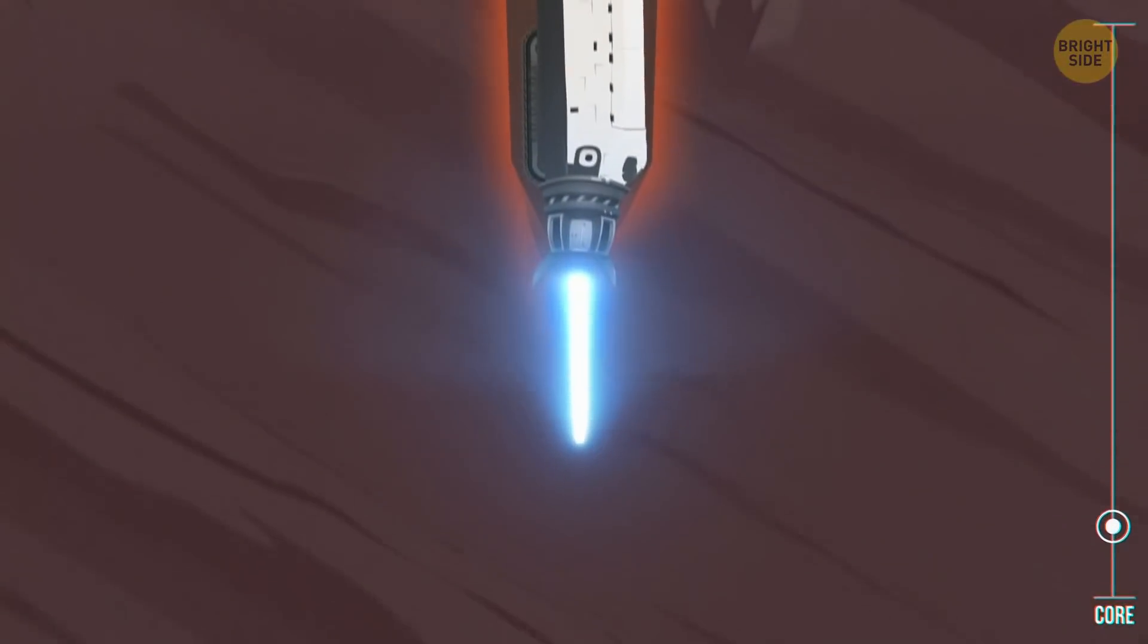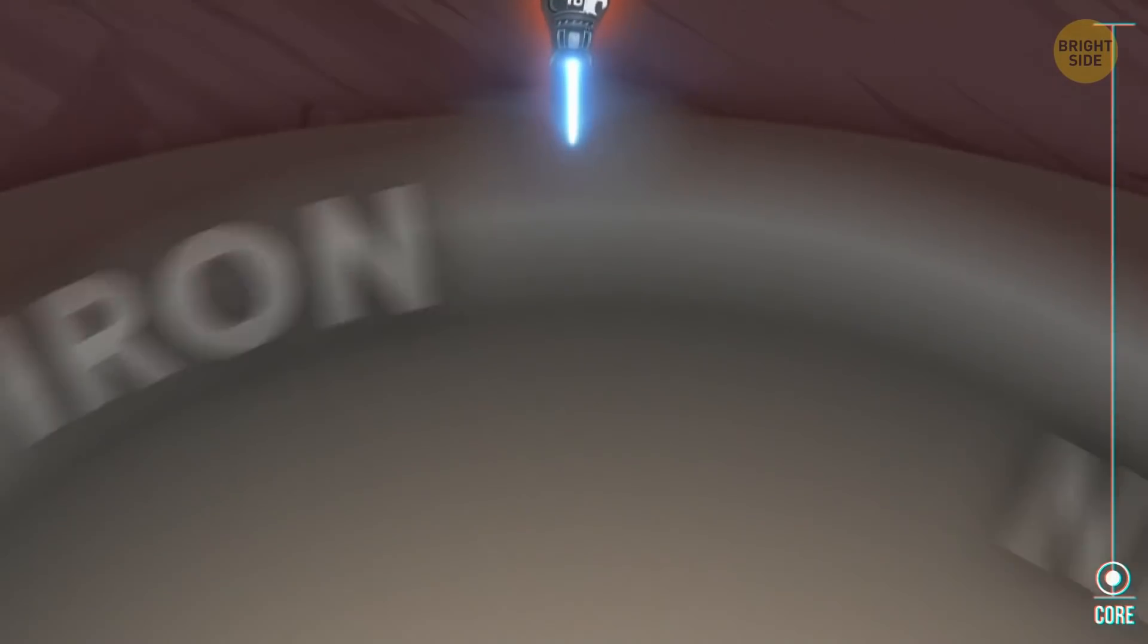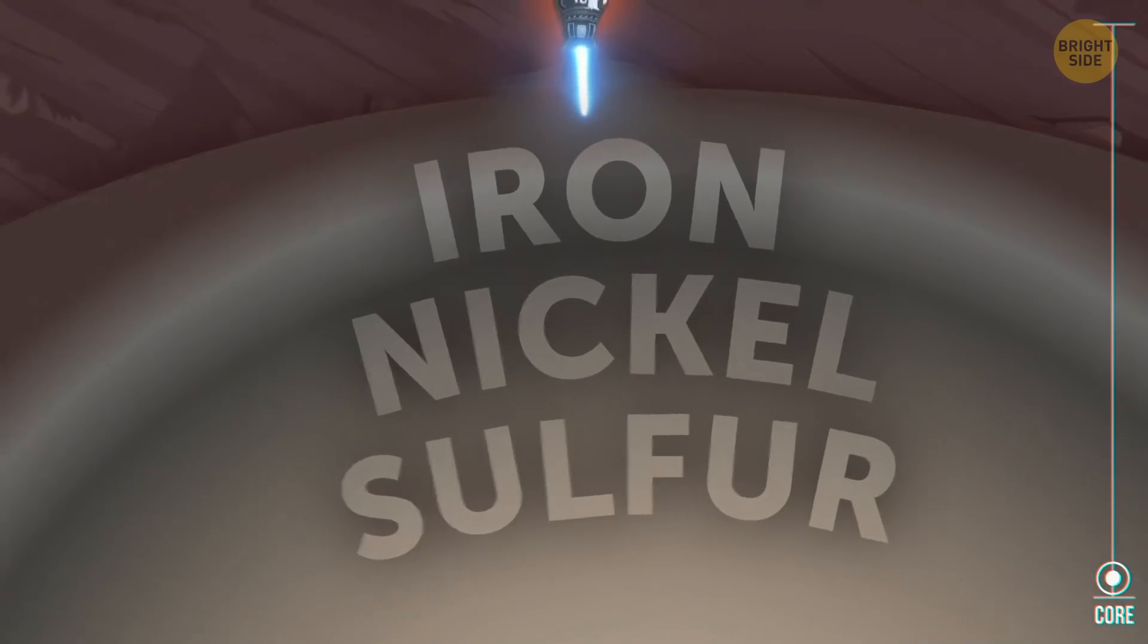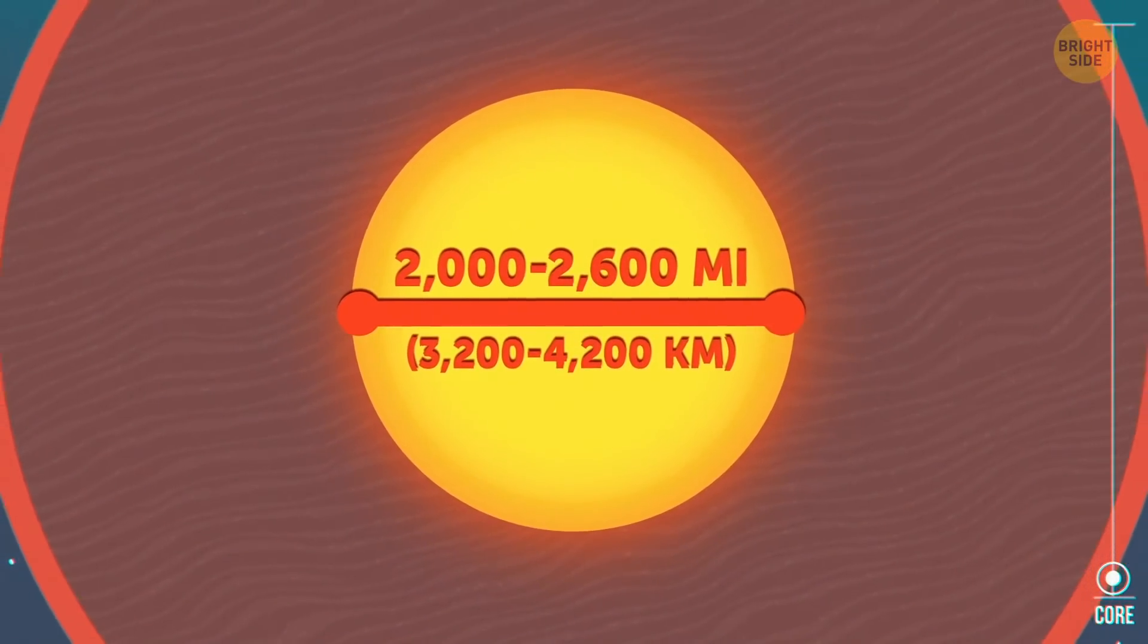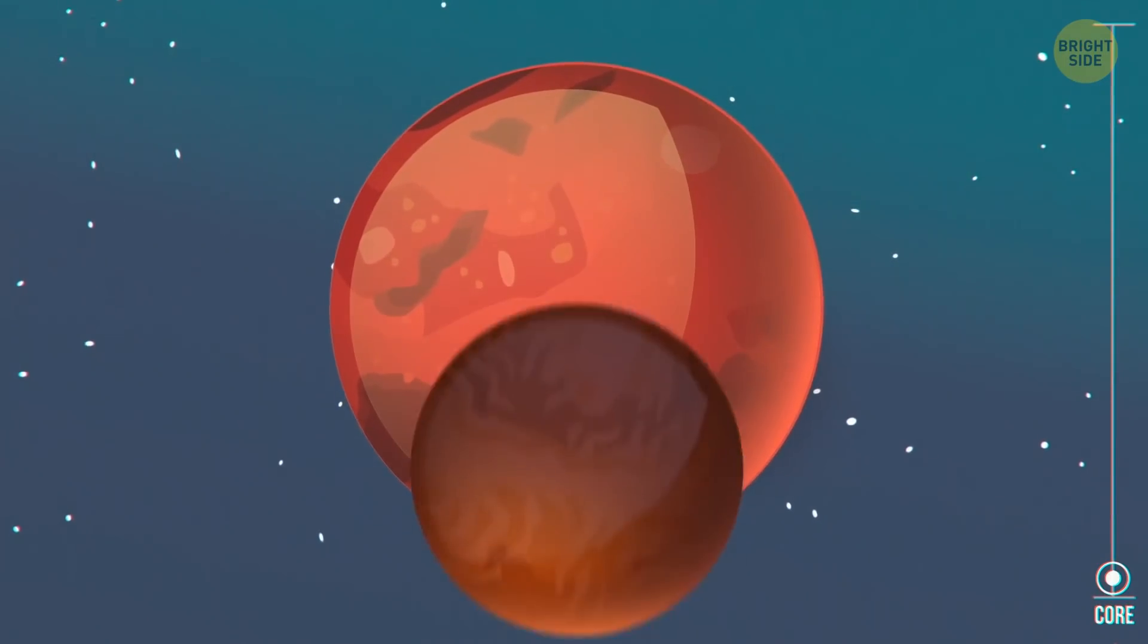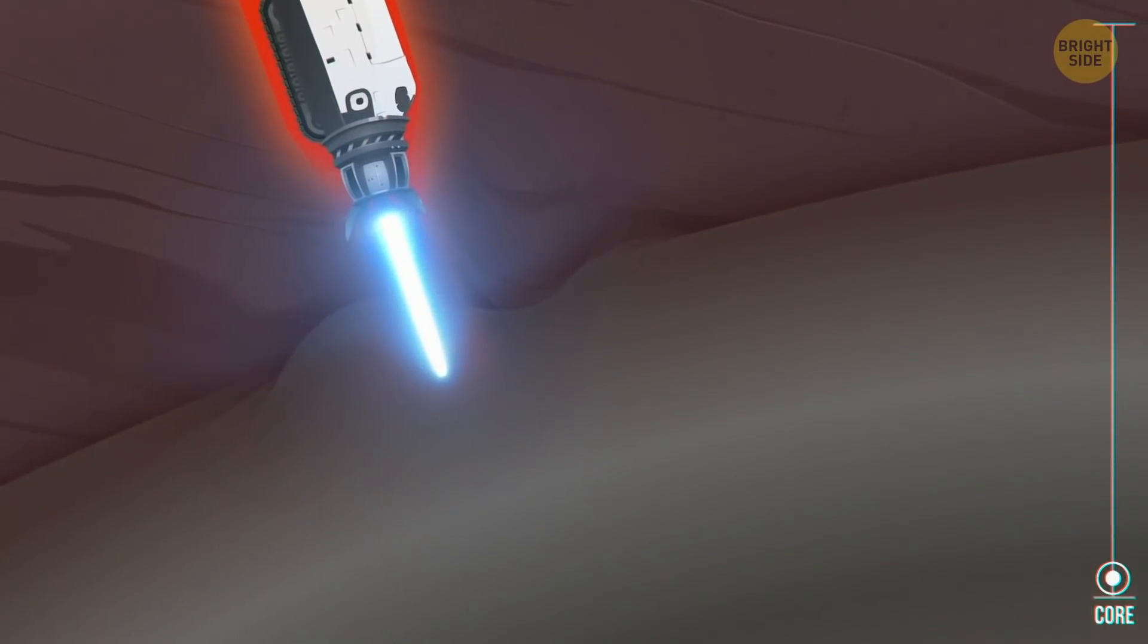It's a long dig, but we finally come to a screeching halt, bumping into the core. A ball of iron, nickel, and sulfur with a diameter of 2,000 to 2,600 miles. This core is bigger than that of Mercury. But the planet itself is larger too, so it figures. Okay then, our next stop is even more interesting.